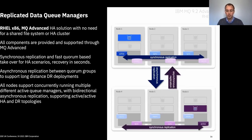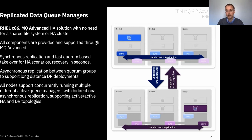RDQM is based on Red Hat Linux, it's part of the MQ Advanced product, and you build up an environment with a number of standard Linux hosts with standard local storage. You configure a high availability group with three nodes. The data is then synchronously replicated between those nodes and you can have automatic failover of a queue manager instance. In this example the queue manager is running on node one and the data is being synchronously replicated to nodes two and three — if there was an issue with node one, the queue manager can be automatically started on node two or three.